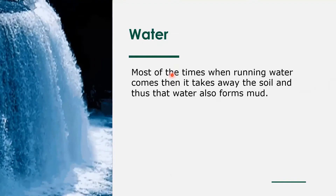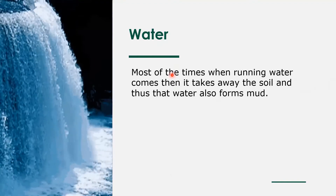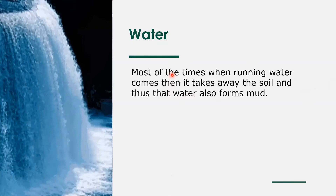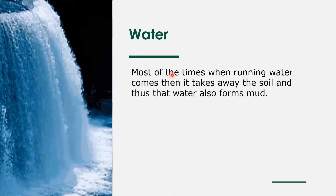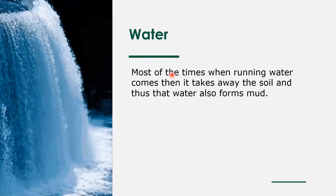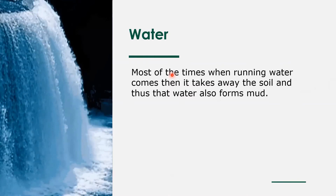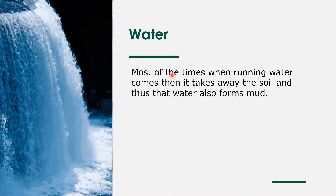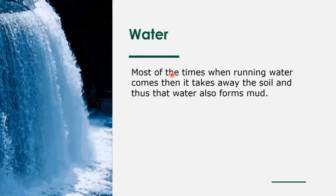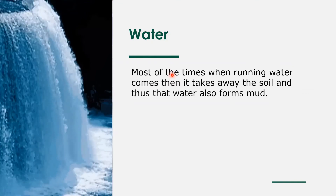Water. When flowing water comes, it takes away the top soil, and when it rains, it also takes away the top soil. This can also cause soil erosion and is another major factor in the causing of soil erosion.